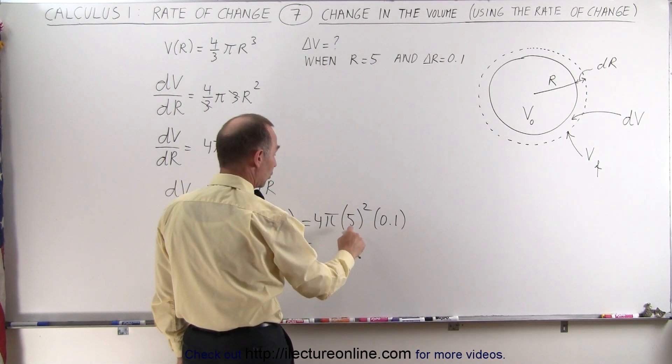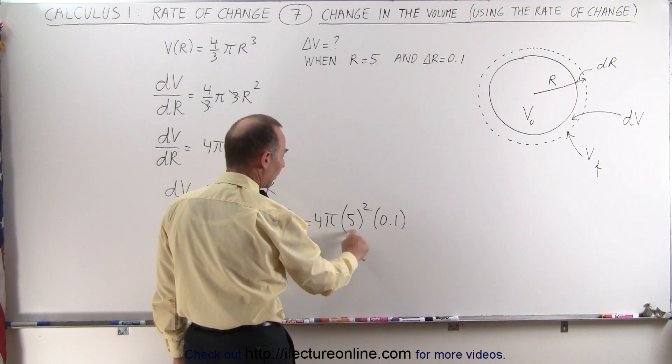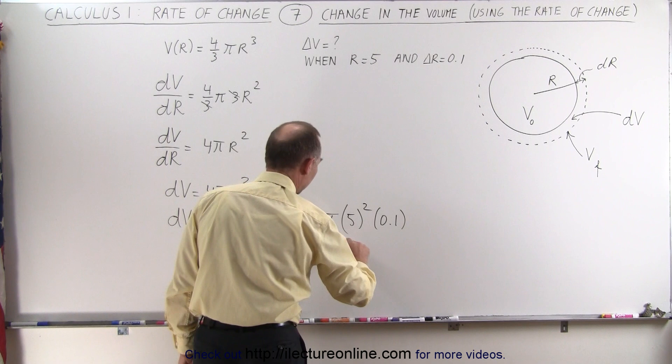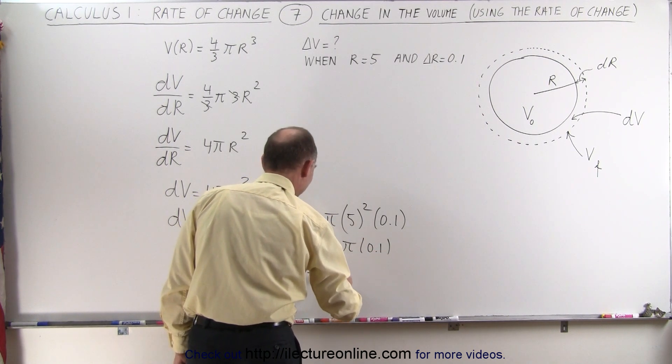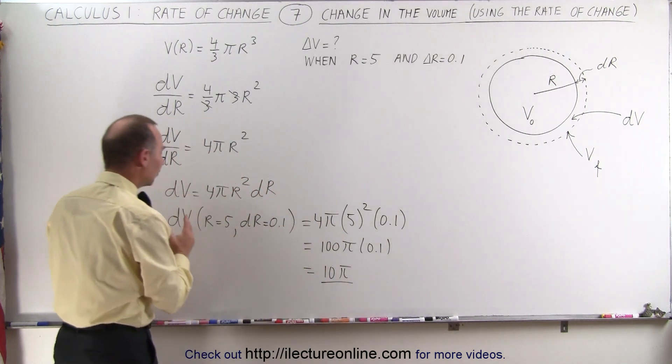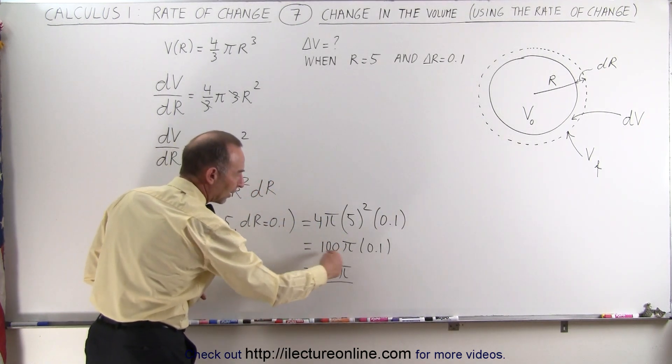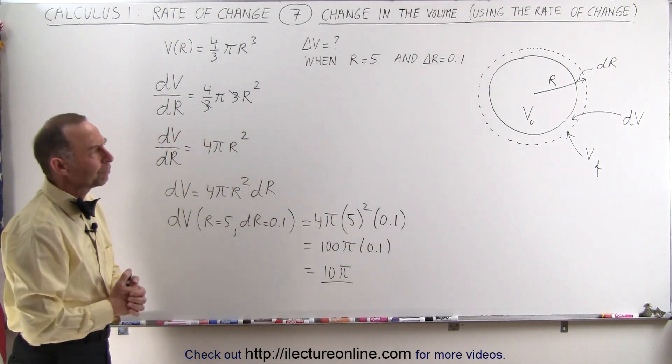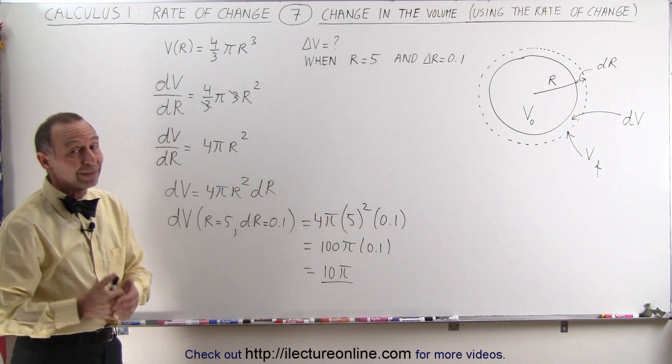So this is equal to, 5 squared is 25, times 4 is 100. So this is 100π times 0.1, and so it would be 10π. So what we're saying is that the volume of this balloon will change by the amount of 10π when the radius changes by 0.1. Does that make sense? Well, let's find out.